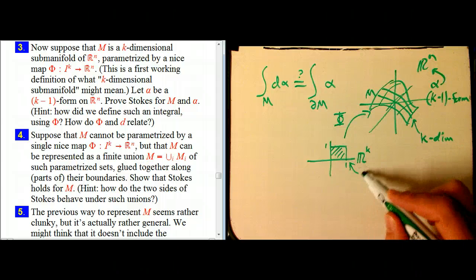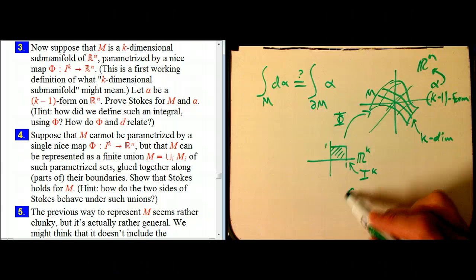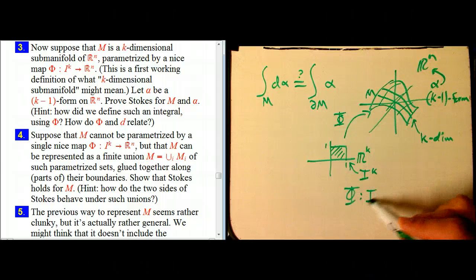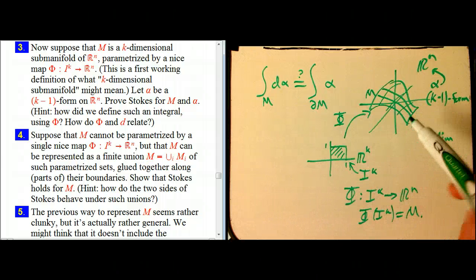In general, it's going to be Ik as the domain. And so phi is going to be a map from Ik to Rn, and its image is going to be M.